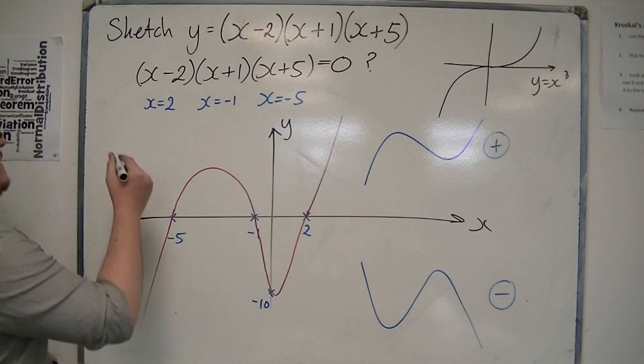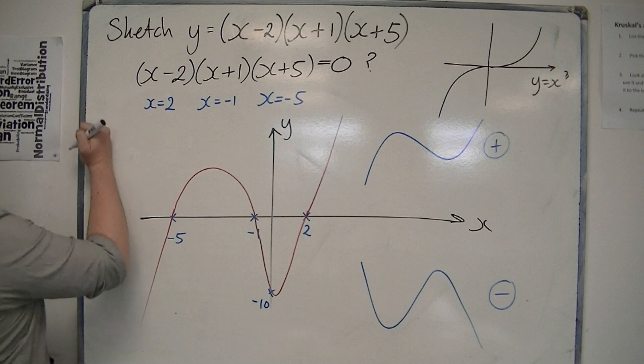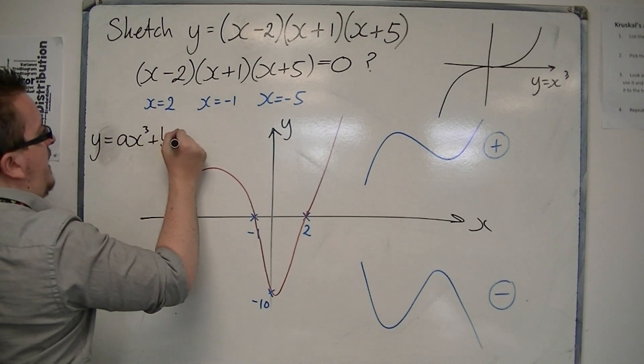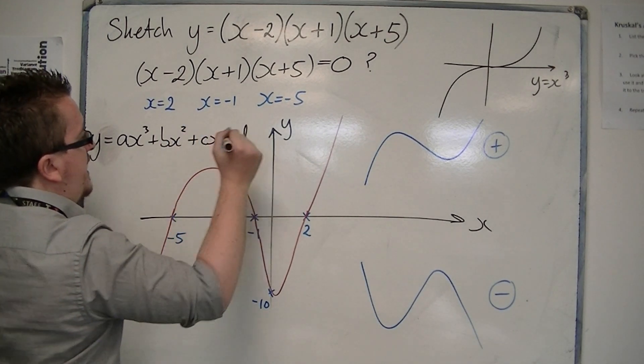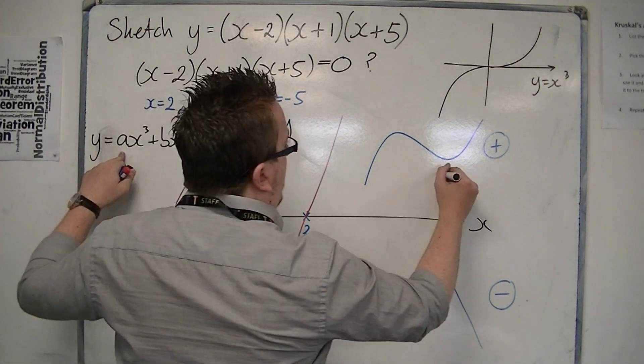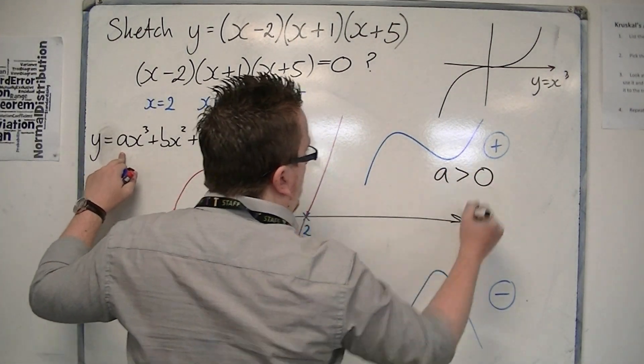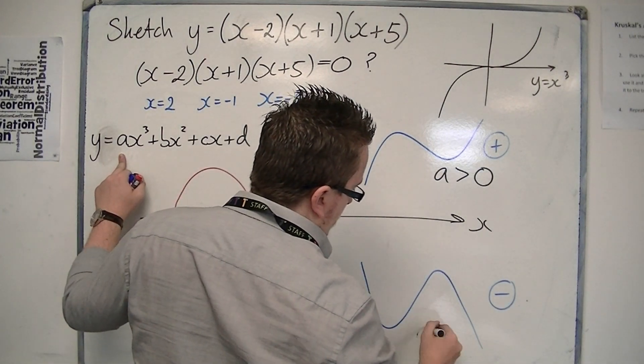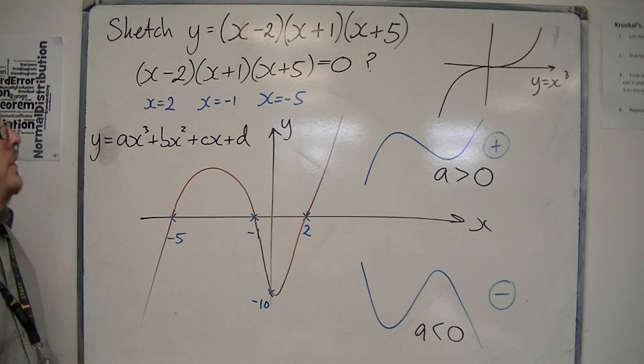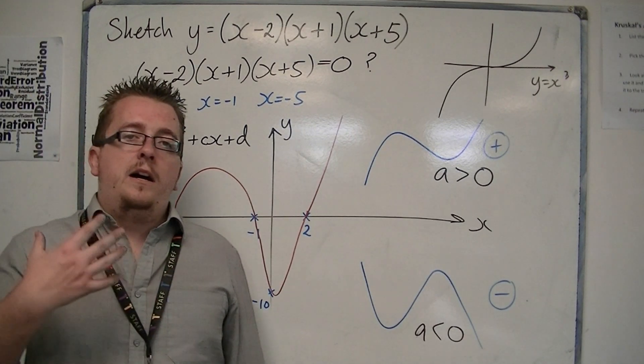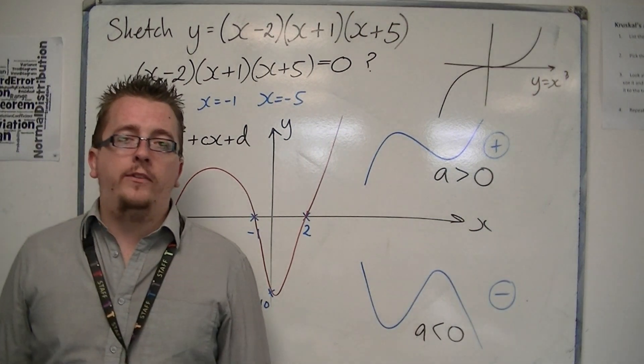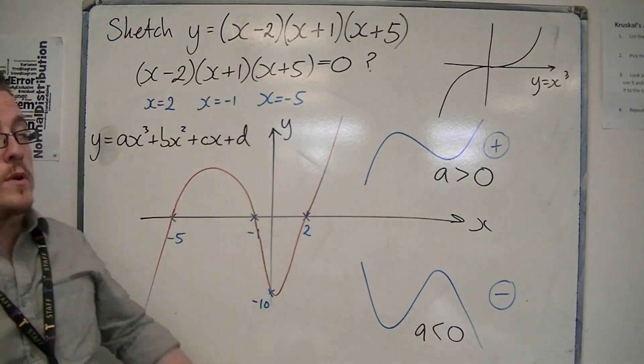So effectively, for a cubic equation, y equals ax cubed plus bx squared plus cx plus d, you've expanded out the whole thing. Then this is when a is positive, and this is when a is negative. That number in front of the x cubed. So we're going to go through a few more examples of this, to get our heads completely around how you sketch these cubics when they're written as three linear terms.